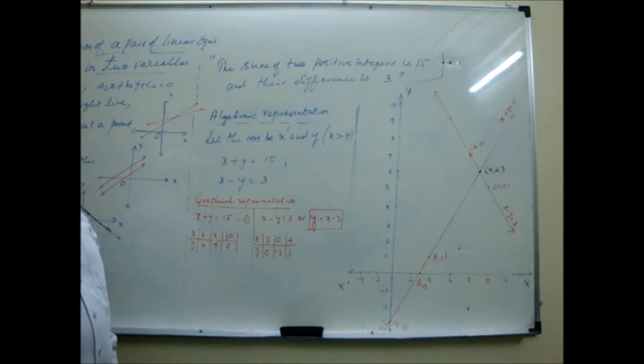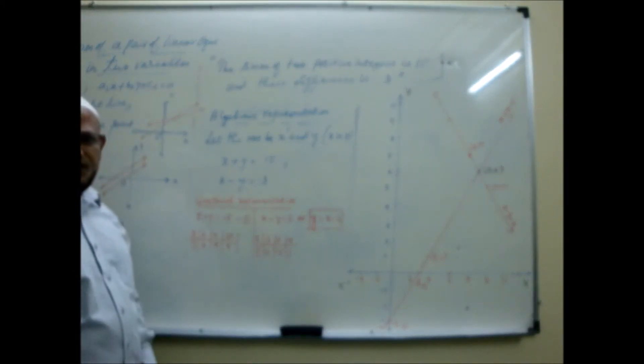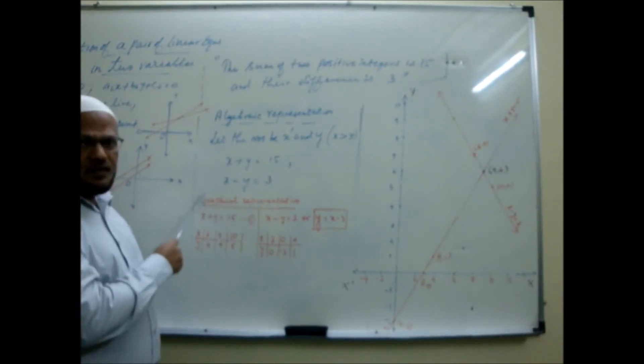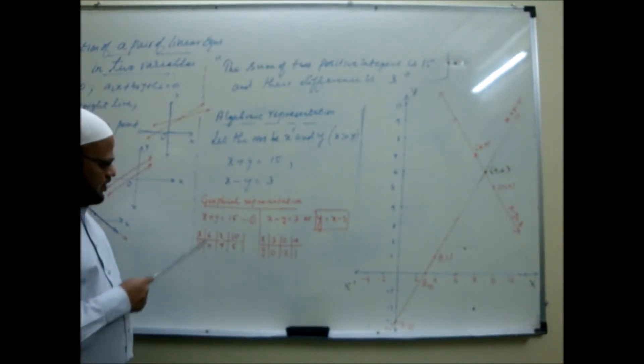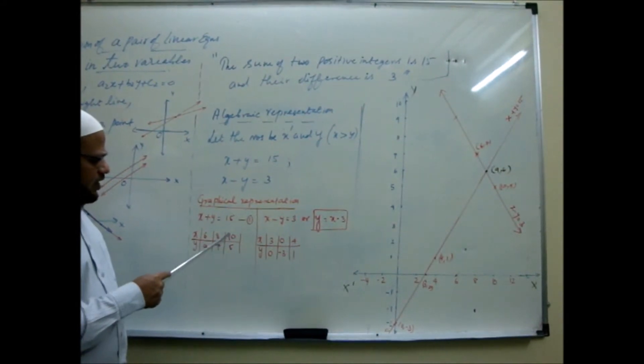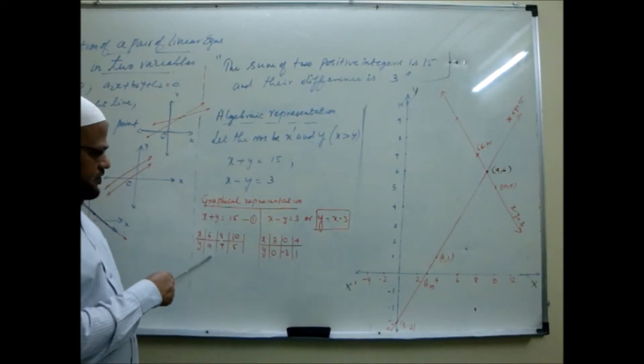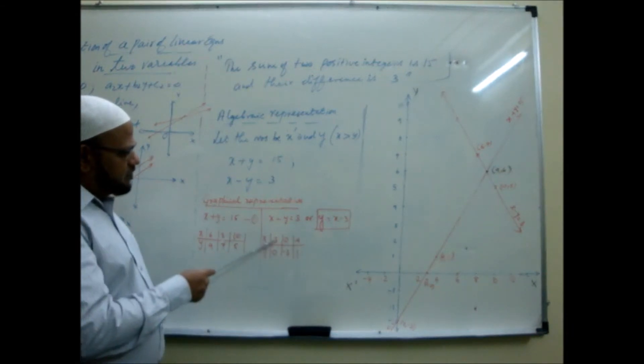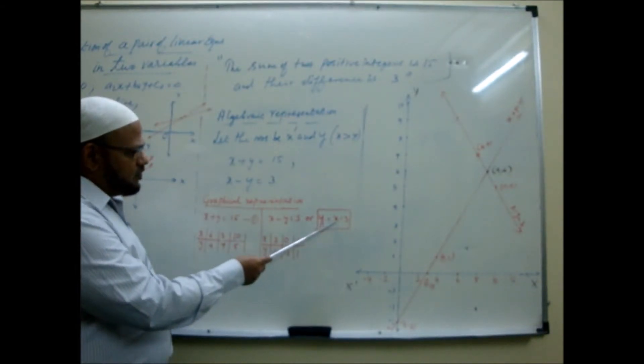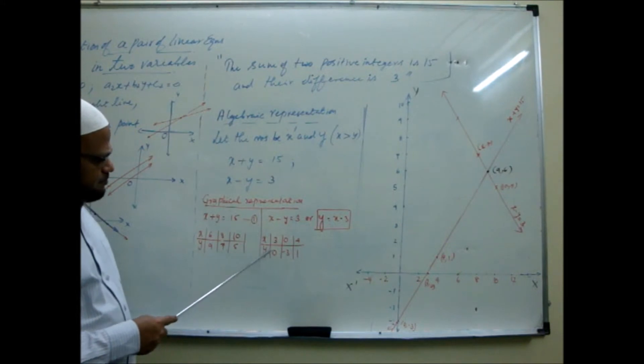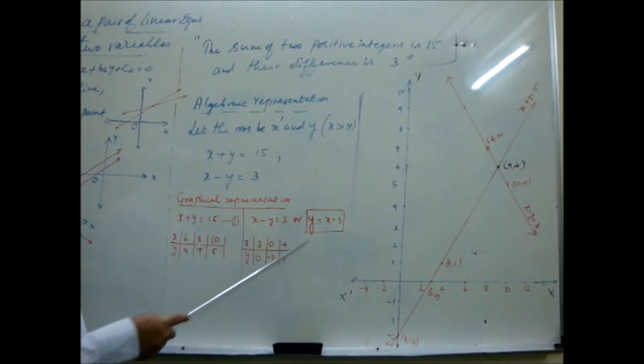Now we are going to graphically represent it. Graphically represent it means you are drawing graph of both the lines. In the same graph sheet you are drawing. I have taken here x plus y is 15. We found the solutions 6, 9, 8, 7, 10, 5. These are points on the graph sheet. So you are plotting these points. Like that x minus y is equal to 3. You can write y in terms of x, y is equal to x minus 3. If you put x is equal to 3, y will be 0. If you put x is equal to 0, y is minus 3. If you put x is 4, y is 1.